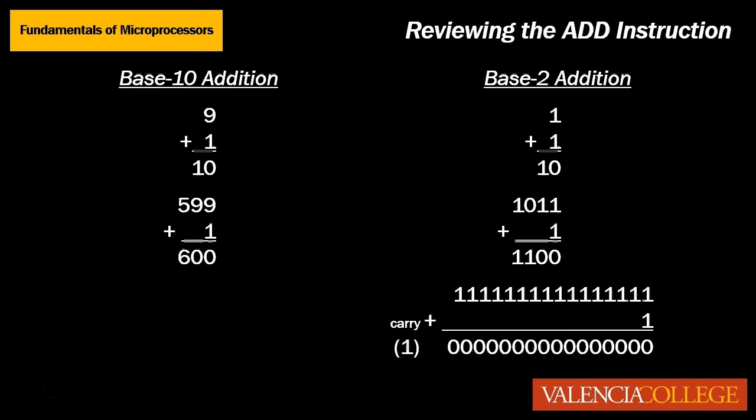The final carried bit shown in parentheses is not lost. Instead it sets the carry flag to one or true. Incidentally this final addition problem also sets a few other flags. Along with the carry flag, the zero, sign, and parity flags are also affected by simply adding one to FFFFF hex.